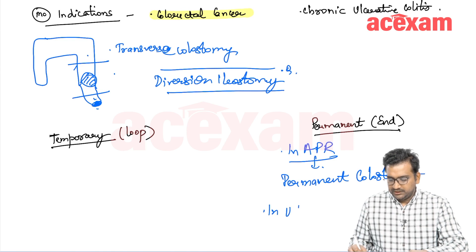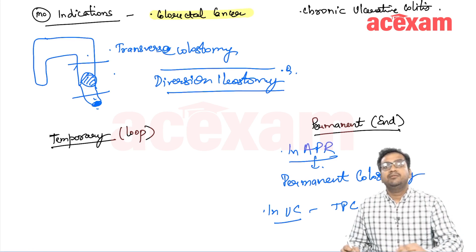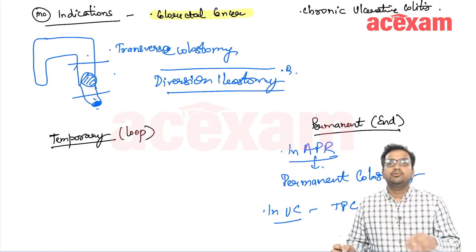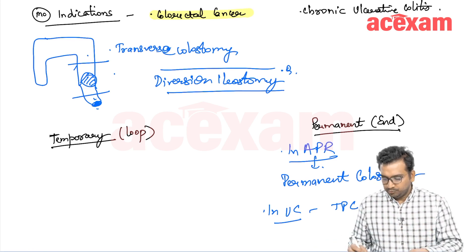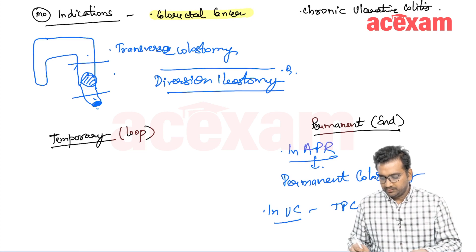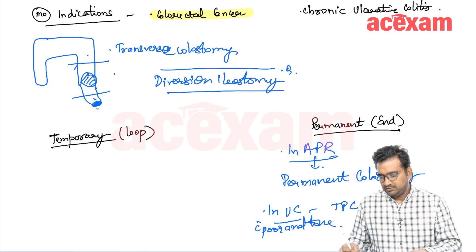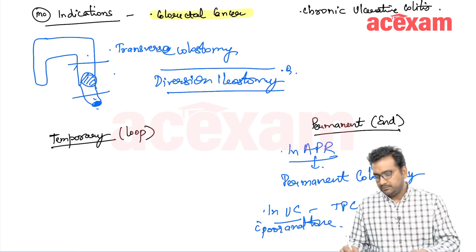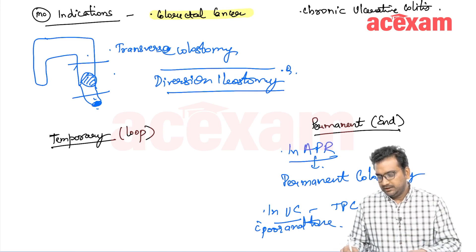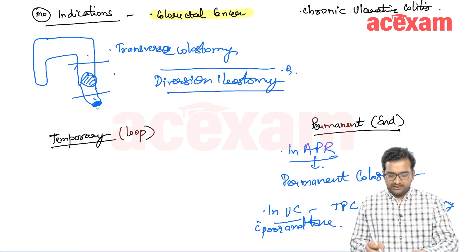In ulcerative colitis, if we are doing total proctocolectomy, we will have to do an ileal pouch-anal anastomosis. But if the patient has poor anal tone, then we can do total proctocolectomy with end ileostomy, and this end ileostomy will be permanent.